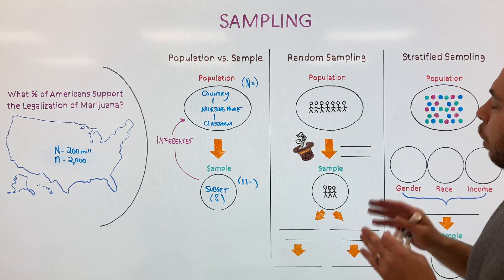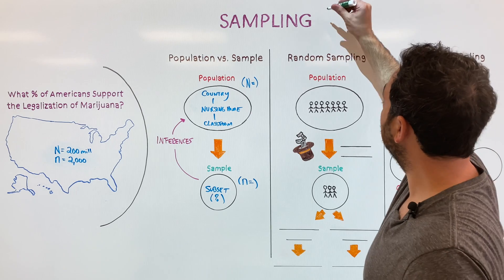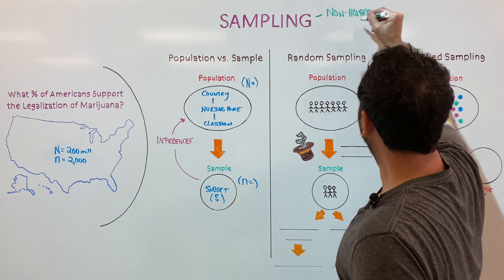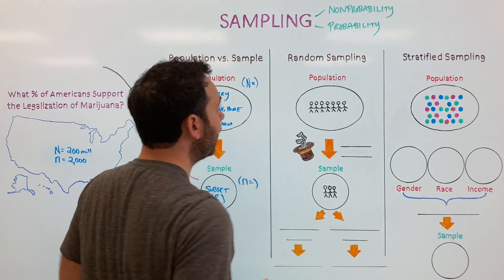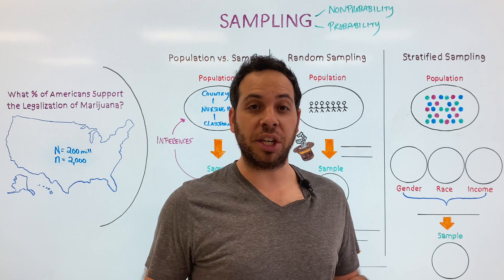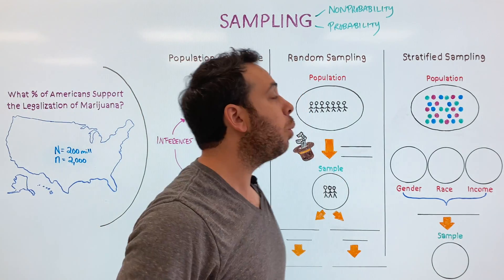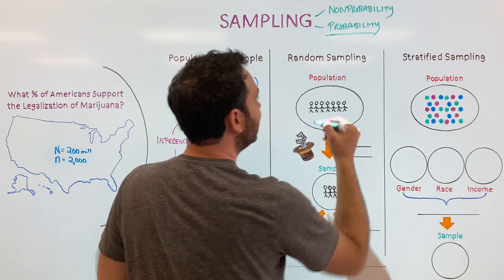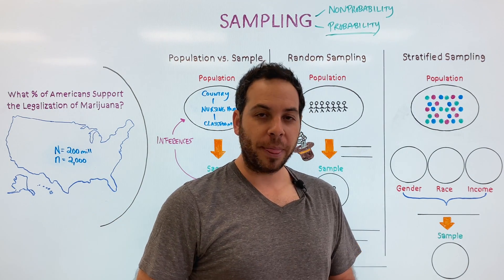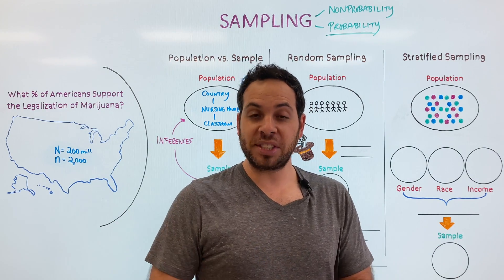Now that we have our population and sample, there are various ways you can do sampling. Sampling comes in two forms: non-probability sampling and probability sampling. Non-probability sampling is often based on convenience — who's around you, who's close to make things easier. This is why we call it convenience sampling, or maybe volunteer sampling. But what we really want to focus on is probability sampling, because it's based on chance. Every member of a population has an equal chance to be in your study, so we can account for individual differences — age, gender, race — and make better inferences from the sample to the population.